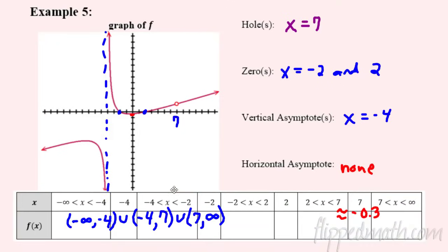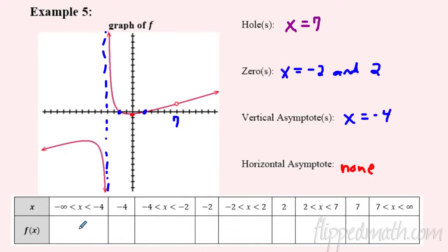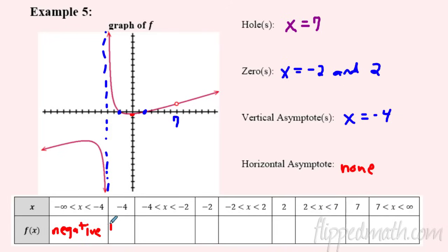Now let's look at a sign table, which shows what the function is doing — positive, negative, zero, or undefined — over different intervals. On the first interval from negative infinity to negative four, the function is negative. At x = -4, it's undefined — it's the vertical asymptote, so we write DNE or undefined. From negative four to negative two the function is positive.